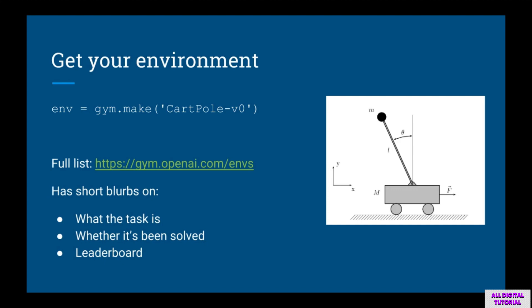The next thing you want to do is get your environment using the gym.make function. Notice how in this example we're getting the CartPole environment. CartPole is the environment where the task is to balance a pole on a cart. Of course, gym has other environments as well. One way to get a full list of environments is to simply go to their website and click on the link Environments.